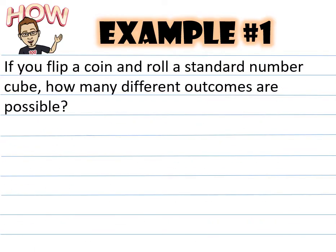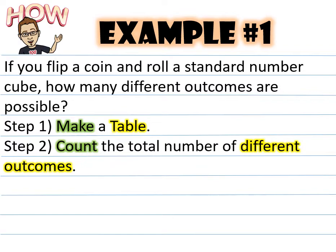Example number one. If you flip a coin and roll a standard number cube, how many different outcomes are possible? Step number one, you want to make a table. Not a tic-tac-toe board kind of table, but just making like a t-chart. Step number two, count the total number of different outcomes.